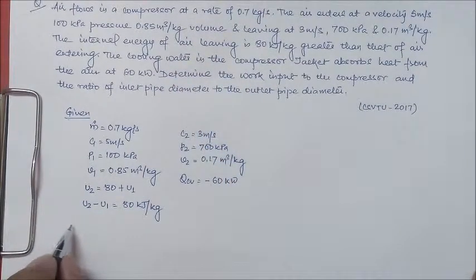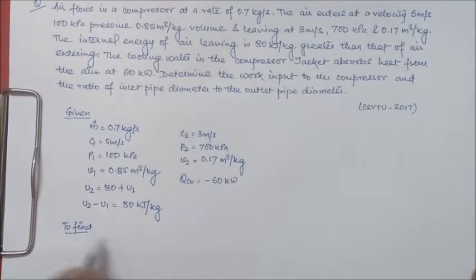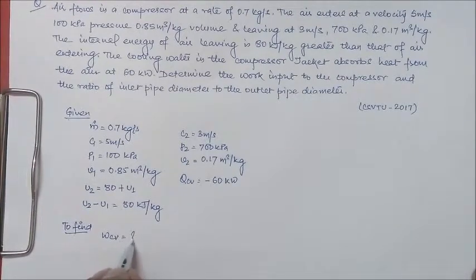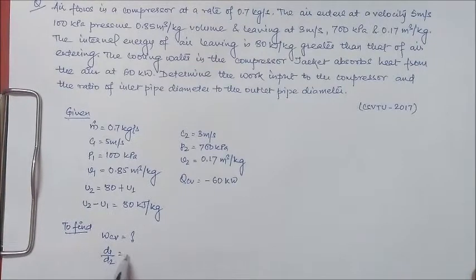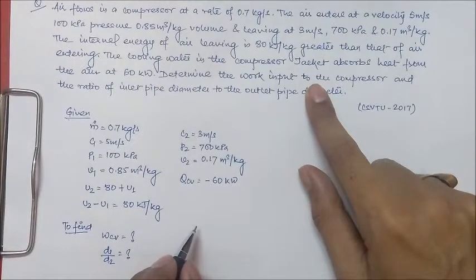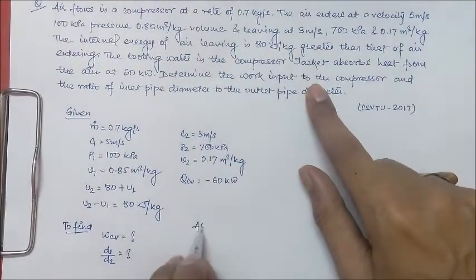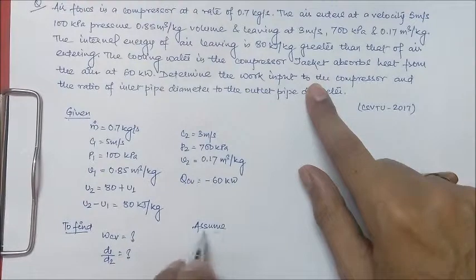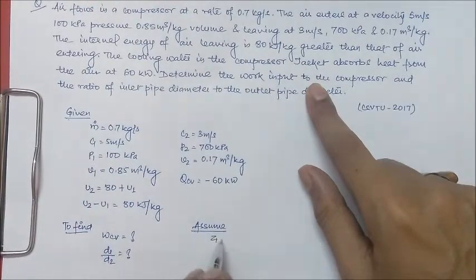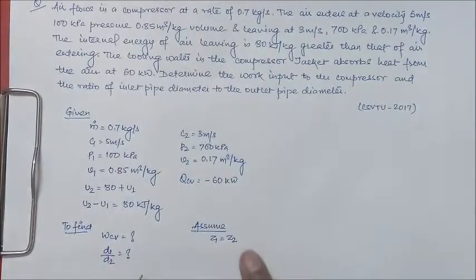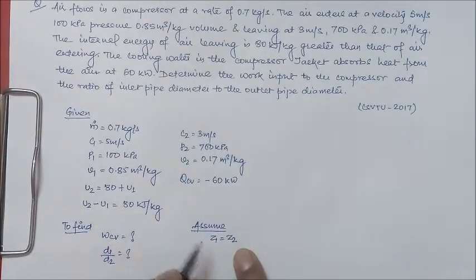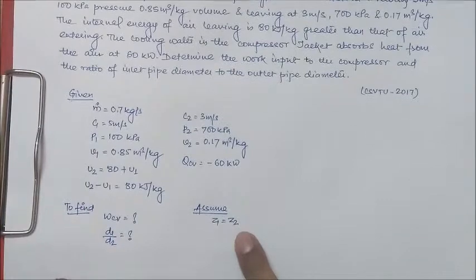We have to find WCV, the work input to the compressor, and D1 by D2, the ratio of inlet to outlet pipe diameter. There is nothing mentioned about the change in potential energy, so we assume Z1 equals Z2, meaning the change in potential energy is negligible and we can neglect it.